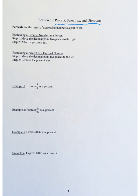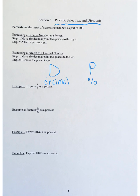A good memory trick you can use is to think of this chart. I'll use D for decimal and P for percent. You are always going to move your decimal point two places — it's always two hops — either to the right or to the left.